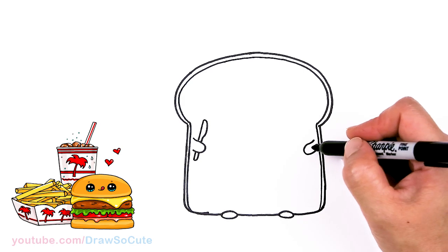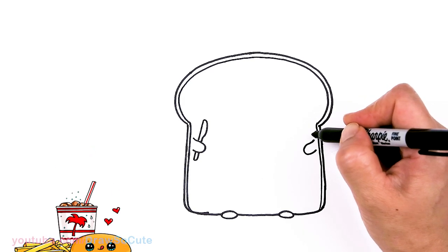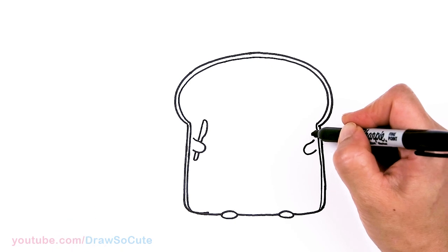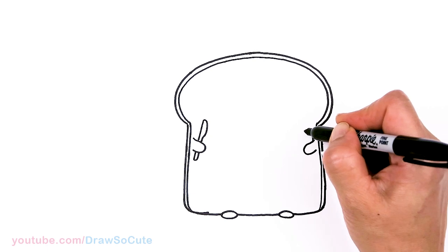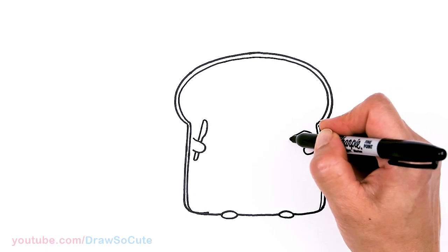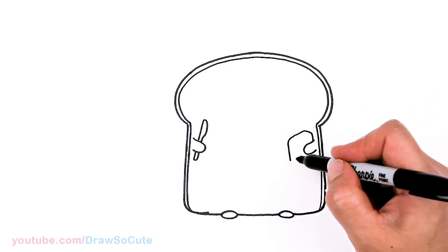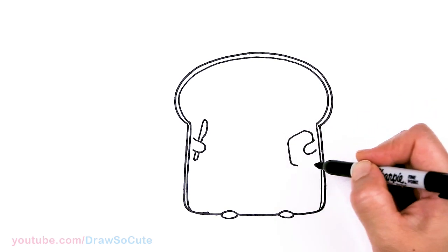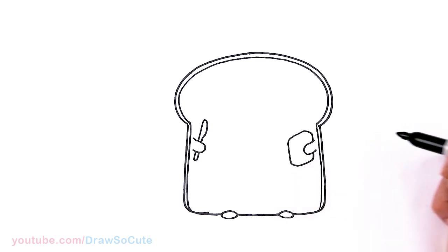And then on this side we're going to have the slice of bread holding a slice of butter here. So let's come up right here. Give it a little edge. Come across and come down. And then right here at the bottom we're just going to give a little edge again and go up and right back.